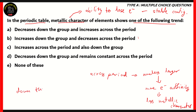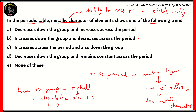When we go down the group, the element below will have an extra shell. For example, in halogens, chlorine has one shell more than fluorine, and bromine has one shell more than chlorine and so on. The extra shell means there is a size increase. That means the affinity between the nucleus and the electron decreases, which results in increased metallic character. So down the group, the metallic character of elements increases, while across a period, the metallic character decreases.